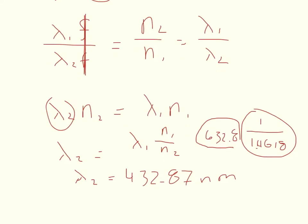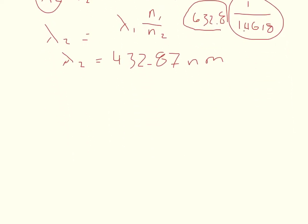Now it wants us to find the frequency in the solution. Here's the key: the frequency in the first medium is equal to the frequency in the second medium — frequency doesn't change. So it wants the frequency in the solution. Because we know all the components of this light beam in a vacuum, we're going to solve for frequency in a vacuum, and it will equal the frequency in the solution.